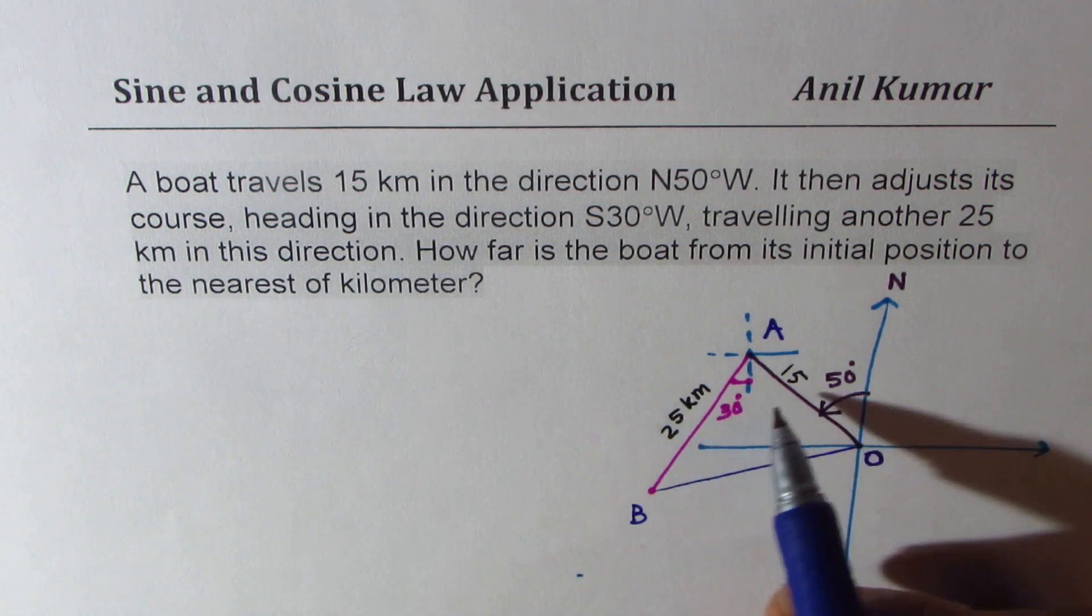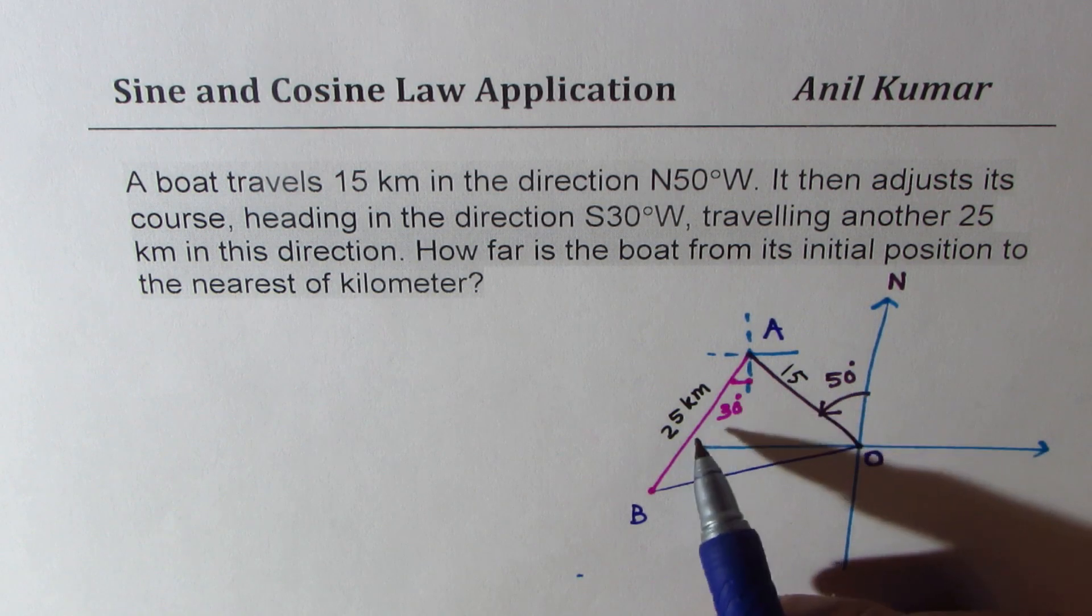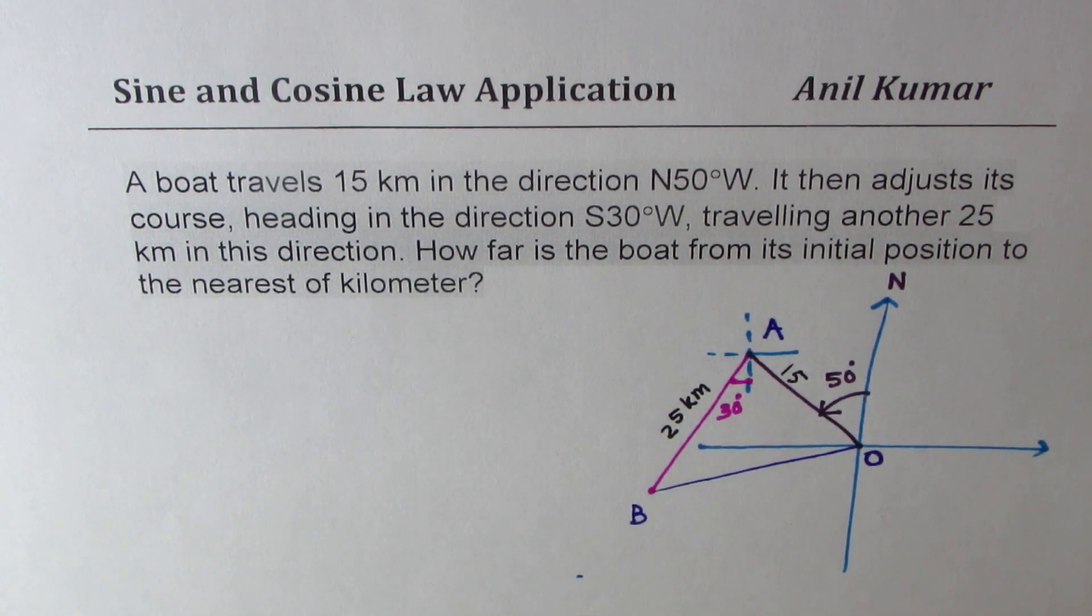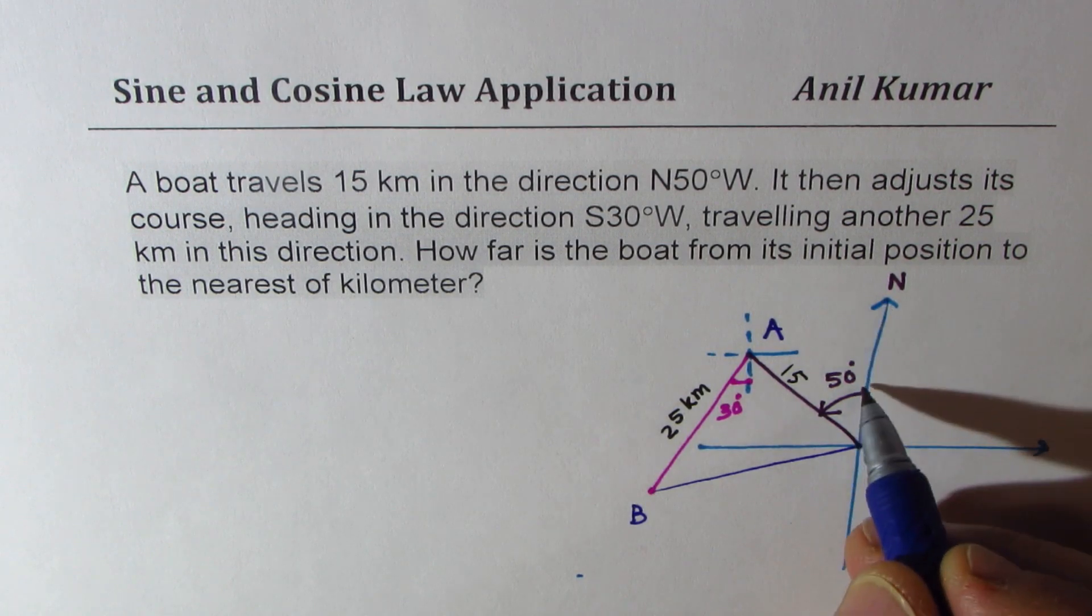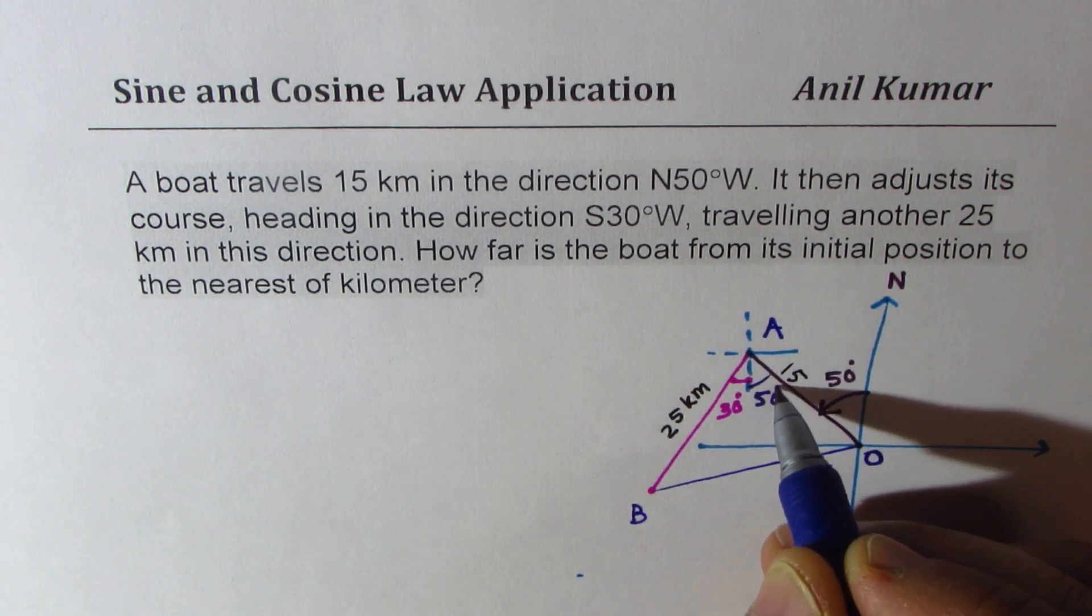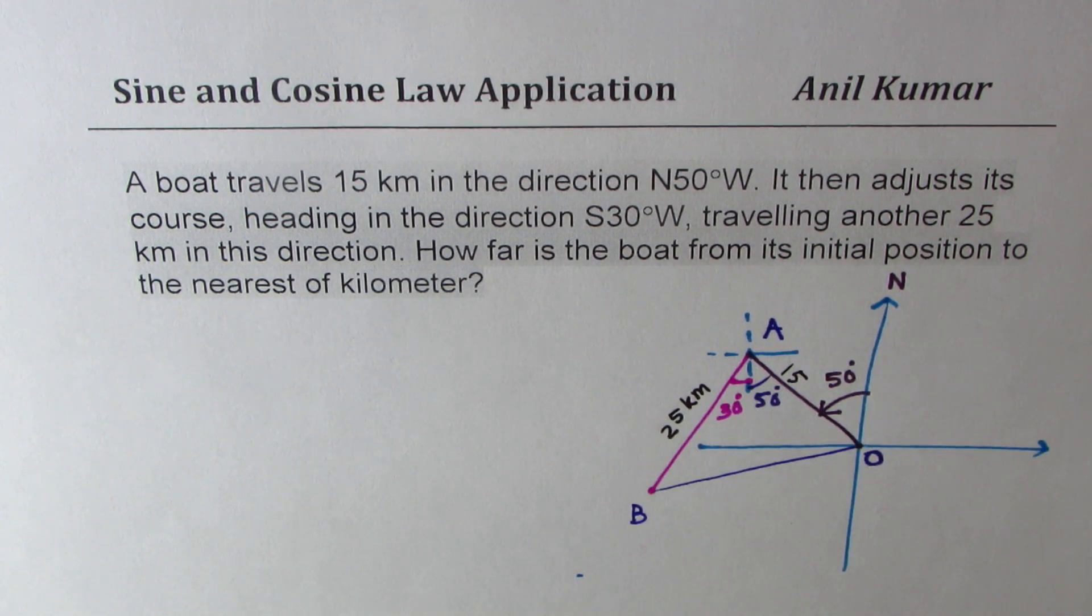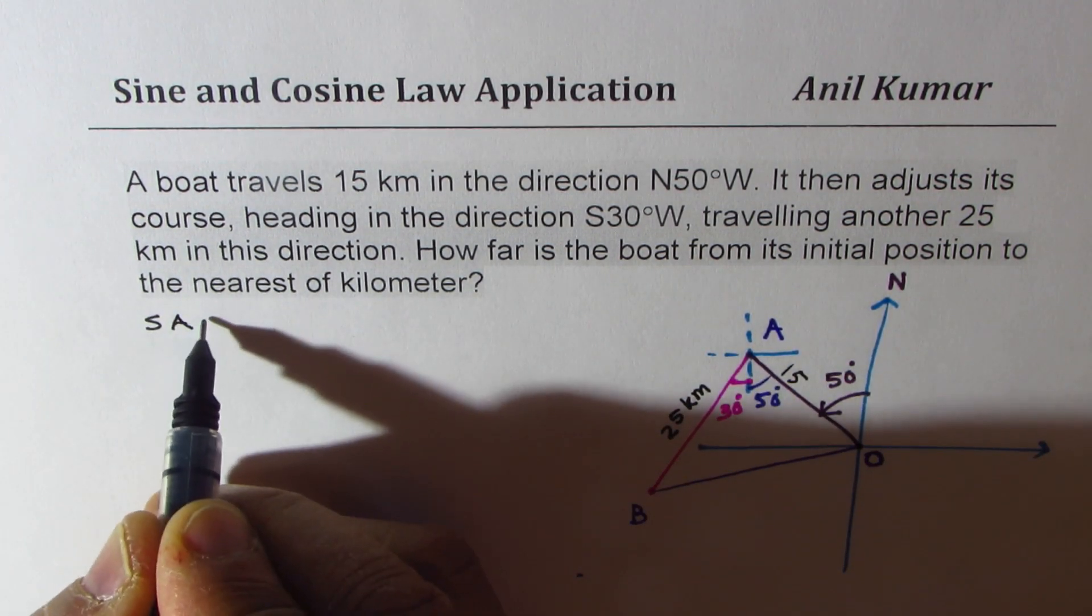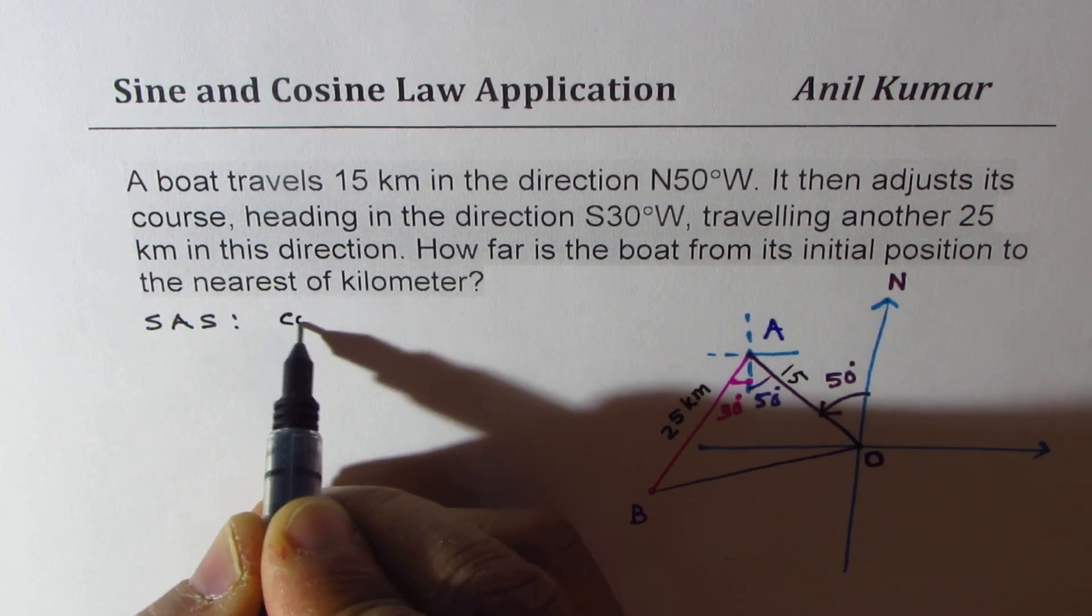Now, we know two sides. We can always find the angle in between. From north, it was 50 degrees. So this is also 50 degrees. So the total angle here is 50 plus 30, 80 degrees. And now, since we know two sides with included angle, we have to apply cosine law.